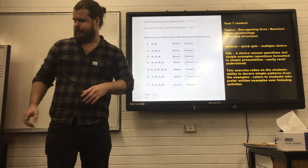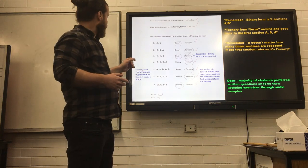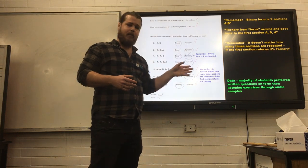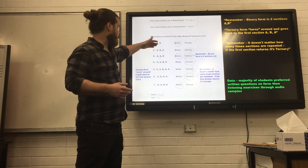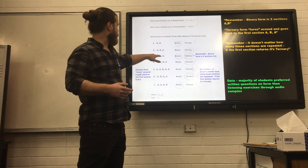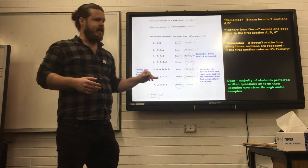My feedback on this student: three comments. First, remember binary form is two sections, A and B. This student got almost all seven correct, with the exception of number three. My comment was simple: remember binary form is two sections, just A and B.